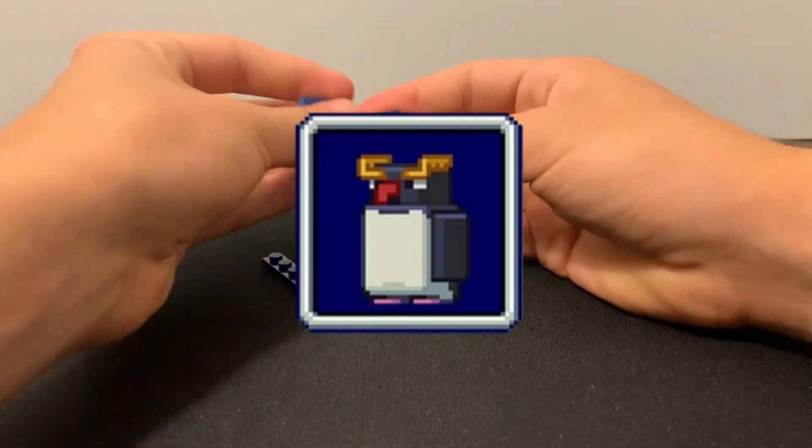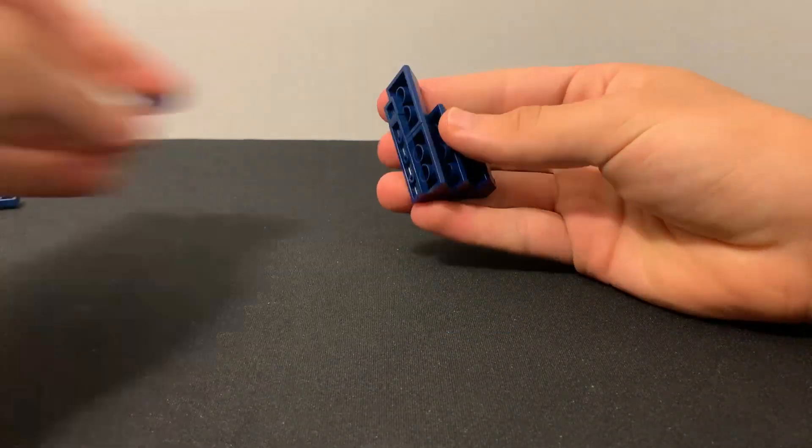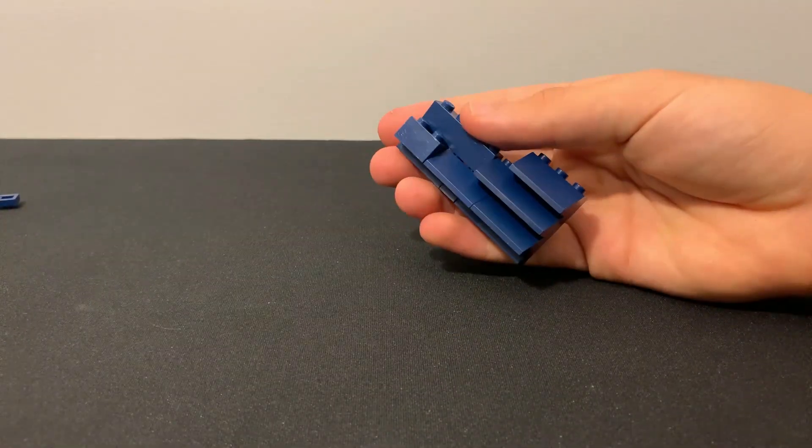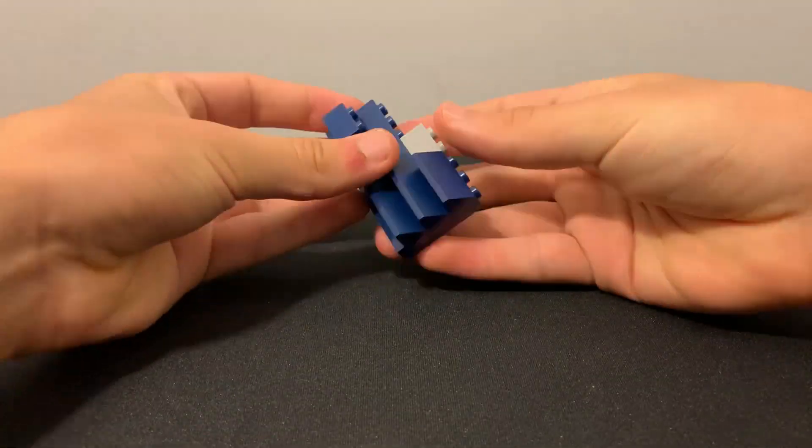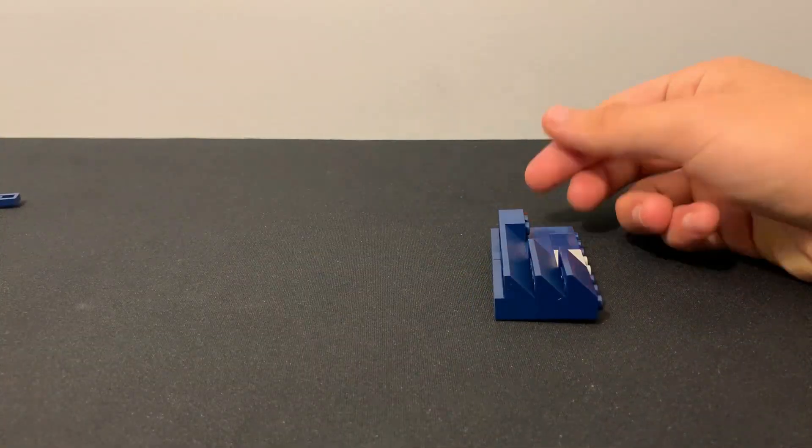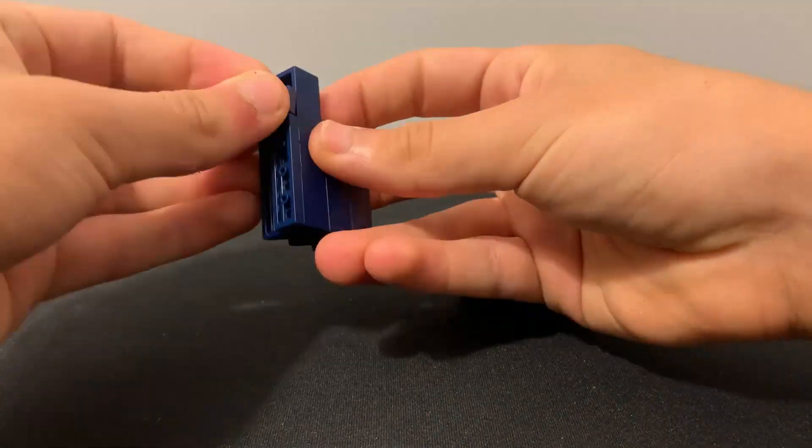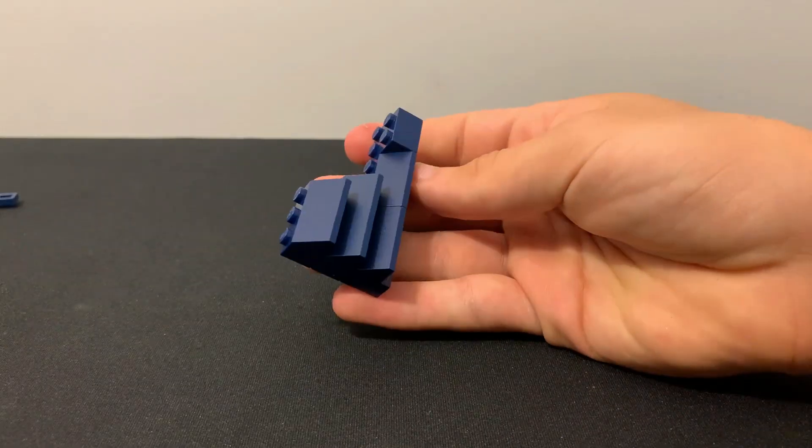First up, we have the penguin, which was already going to be a challenge because of my limited supply of dark blue bricks. I built up the sides of the penguin using these dark blue roof pieces. I had to plan this out very carefully so I could make use of all the pieces without wasting anything.